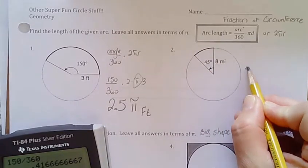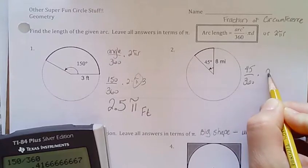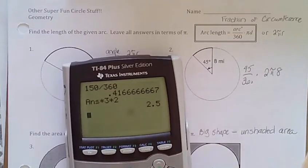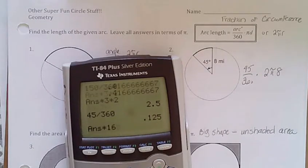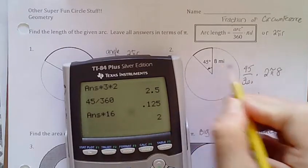Over here, 45 divided by 360 times 2 times pi times radius which is 8. So I'm going to do 45 divided by 360 times 16. 2. Don't forget the pi. Miles.